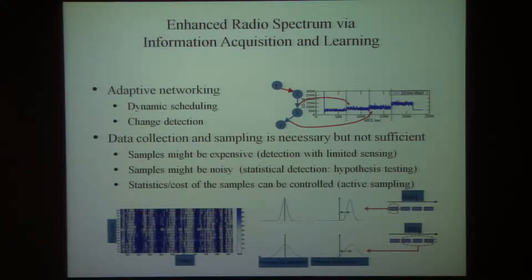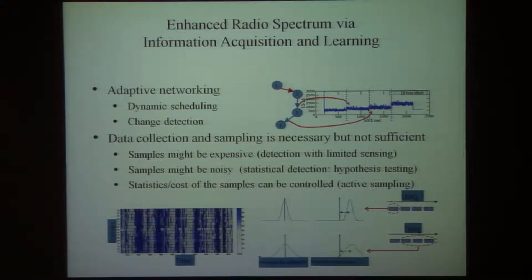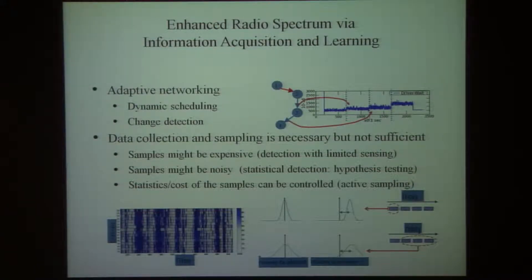There are three categories she's been talking about. First, sampling where sampling might be expensive — so you're trying to do detection with limited sensing. The second is samples with noise, which is probably most likely to happen anyway, so you have to use statistical hypothesis testing to make decisions and deal with the uncertainty that comes with noise. Lastly, if the sampling is costly, then you may want to do active sampling — figure out how you want to sample and, based on this sampling strategy, make decisions.